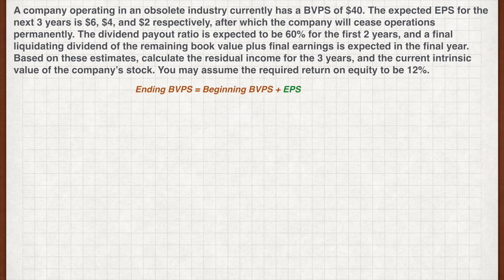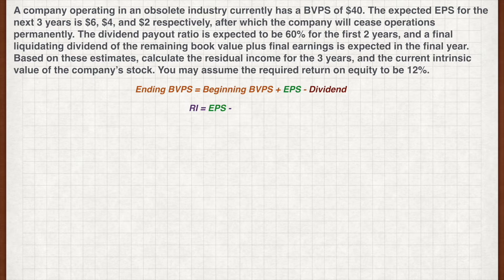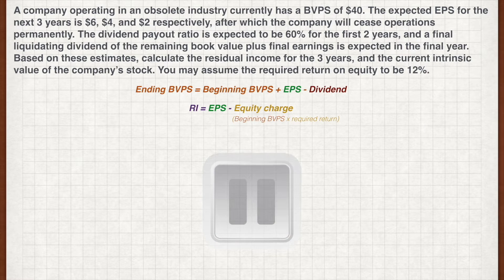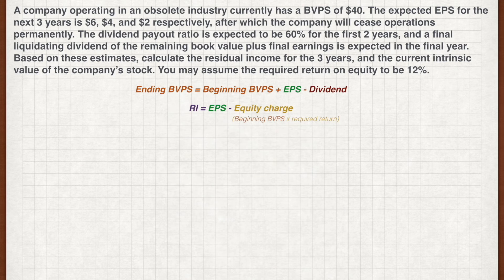As a hint, you may want to calculate the ending book value as the beginning book value plus earnings minus dividends. The residual income for each period is earnings minus the equity charge, which is the beginning book value times the required return on equity. Pause the video now and work out your answer.